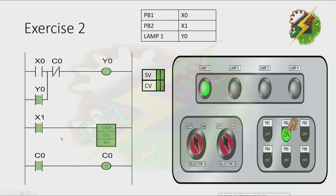1, 2. And because C0 is activated, the normally closed contact of C0 here will turn off, and the normally open contact of C0 here will turn on. If the normally closed contact of C0 turns off, that will make counter 0 reset. And that's it. Now let's go to our next exercise.